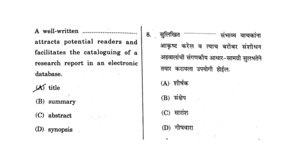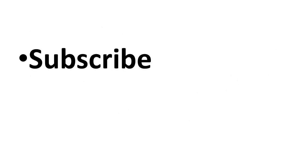Next question: a well-written dash dash attracts potential readers and facilitates the cataloging of a research report in an electronic database. If you read any journal or article, what attracts you is the title — the title is what you see first, and if it is interesting and catchy, you go for the real content. So your answer here is title.